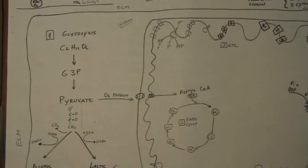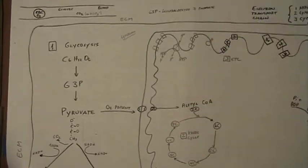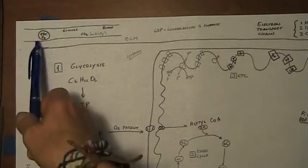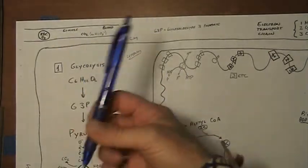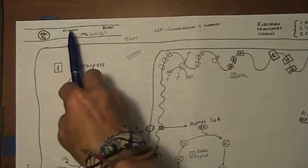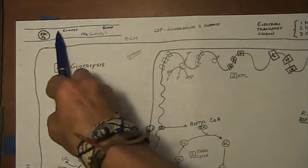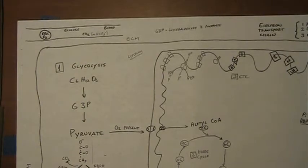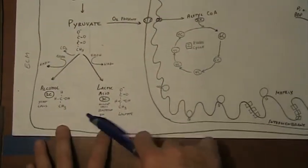Let me show you around so you can become familiar with this — like the game board, how we are going to play. First, right there we have a blood vessel with a red blood cell that carries oxygen, and dissolved in the plasma — the liquidy part of the blood — we have glucose, CO2, and other molecules. The only ones we care about are glucose and the oxygen carried by the red blood cells. Then you will see here is a humongous cell all over.